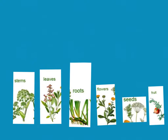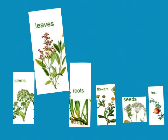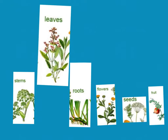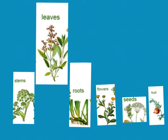And from that, we get the leaves. Leaves absorb the sunlight and the chlorophyll, and it helps to produce the carbon dioxide.